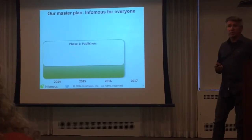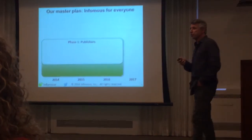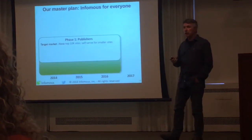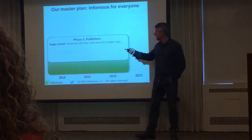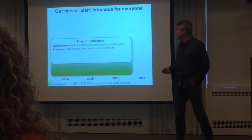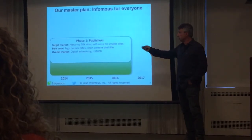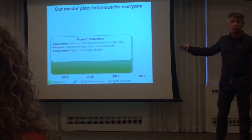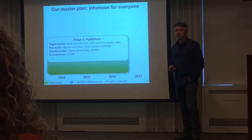We have a master plan. We think this is for everybody — anyone who consumes or publishes information. We decided to go to publishers first, which always gets raised eyebrows. Our target market is the top 10 TechK Alexa websites, with a more self-serve model for smaller sites. The pain point is high bounce rates and short content shelf life. The overall market is digital advertising — over $100 billion a year — and we look forward to making about $200 million a year by year five.